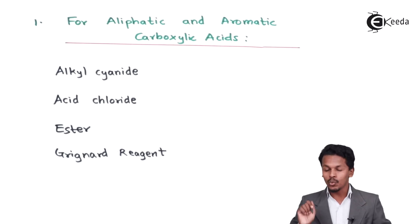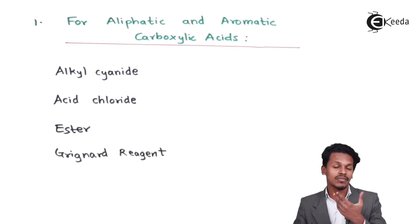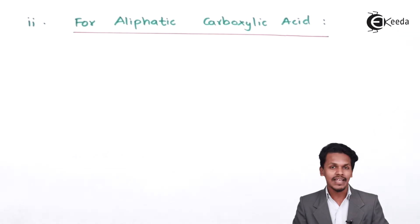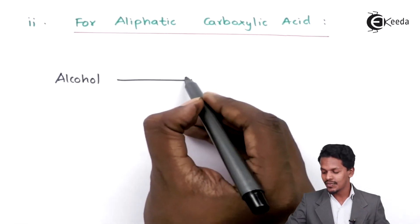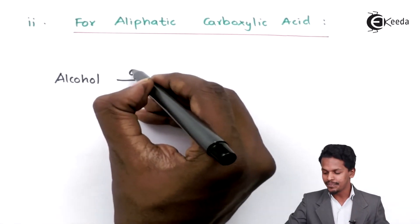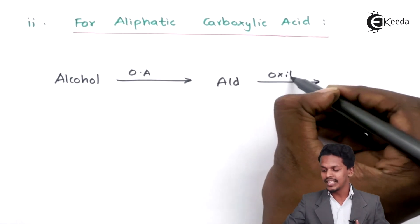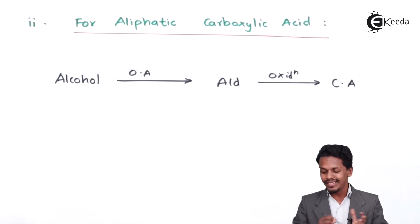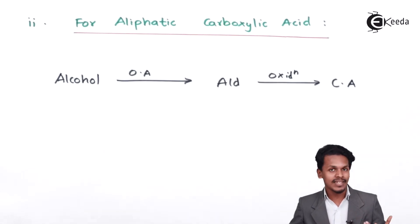Those were the chemical reaction methods to obtain aromatic as well as aliphatic carboxylic acid. Now, to prepare aliphatic carboxylic acid, we can consider alcohol. When alcohol reacts with oxidizing agents it gives us an aldehyde, and on further oxidation that aldehyde is converted to carboxylic acid. By this method we can easily convert an alcohol to a carboxylic acid, though this method only gives the aliphatic carboxylic acid.